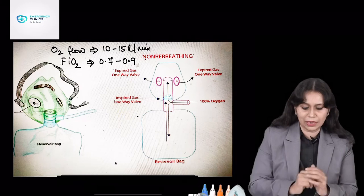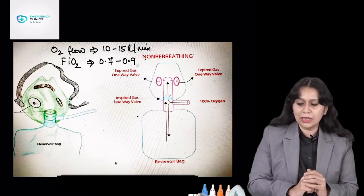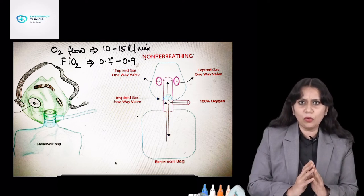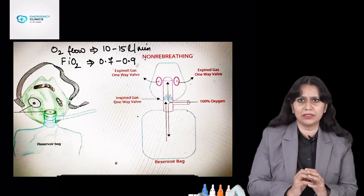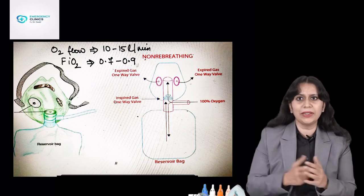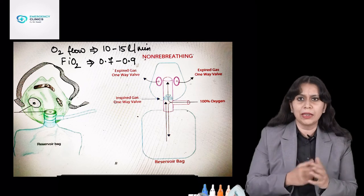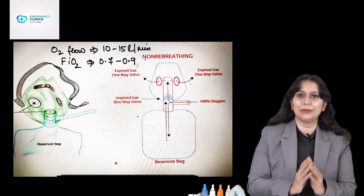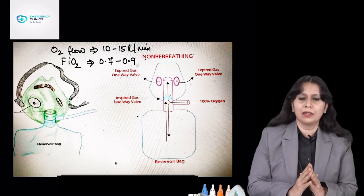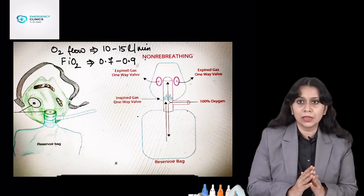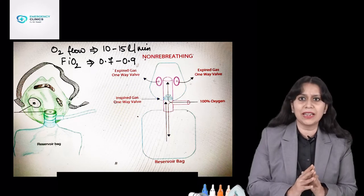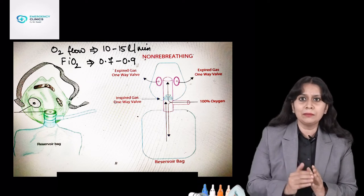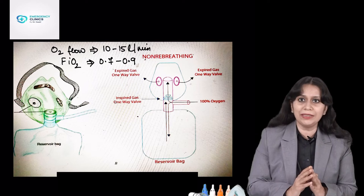Even better is the non-rebreathing mask. In this, the valve is a one-way valve — it will only allow gas from the reservoir bag to go into the mask. So a very high FiO2 will be delivered. Keep flow rate between 10 to 15 liters per minute. FiO2 0.7 to 0.9 — it can deliver up to 90% oxygen. So if the patient's inspiratory flow requirement is not very high but the patient is severely hypoxemic with very low PaO2 and saturation, this is the device of choice — NRM, or non-rebreathing mask (NRBM).